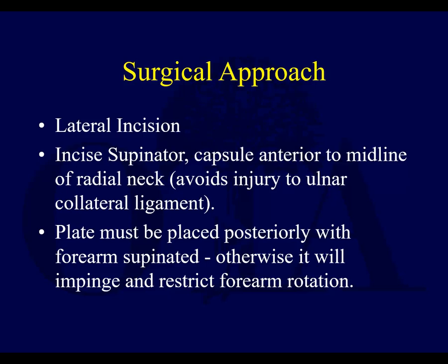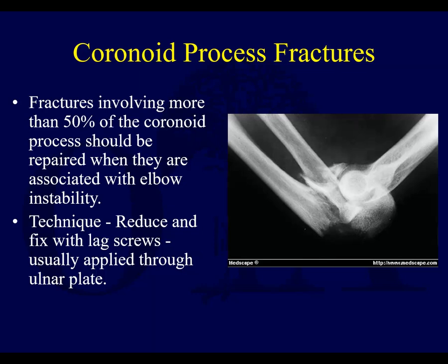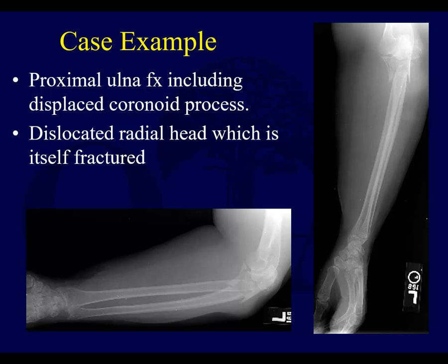When plating a radial neck, make sure the implant does not impinge on the proximal radioulnar joint. Coronoid processes must also be addressed. With elbow instability, if it involves a large fragment — 50% or more — it definitely needs to be fixed with lag screws. For smaller fragments, you can grab the capsule and pull it down using drill holes with sutures tied through the capsule, pulling the fragment down and tying the knot. That's one way to deal with smaller coronoid fractures.